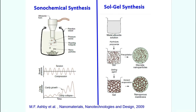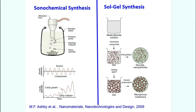The next important technique is sonochemical synthesis, which uses ultrasonic waves. Ultrasonic waves span a frequency range from 15 kilohertz to 1 gigahertz. You can produce these waves by using magnetostriction — where applying a magnetic field causes a material's length to increase — or by using piezoelectric transducers. It is essentially an ultrasonic horn moving back and forth to create ultrasonic waves.